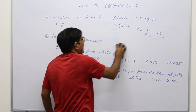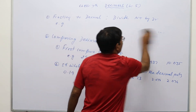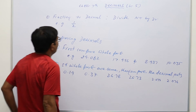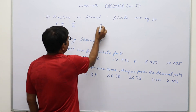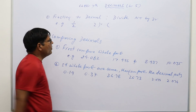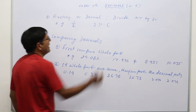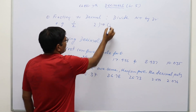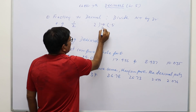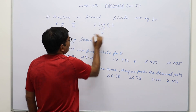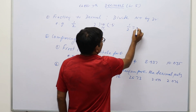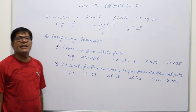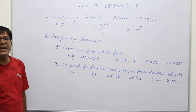For one more example, let us suppose we have to convert 1 upon 2 into decimal. We will divide 1 by 2. Here again 1 cannot be divided by 2, so put decimal and take a zero, making it 10. 2 × 5 = 10, so 10 minus 10 = 0. So 1 upon 2 is equal to 0.5. In this way, if any fraction is given, we can convert it into decimal.